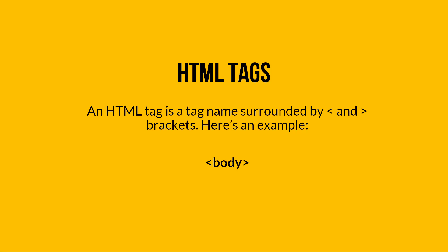We've talked about HTML as a markup language and we use tags to do the marking up. So now let's talk about HTML tags and exactly what they are. What an HTML tag is, is a tag name surrounded by less than and greater than brackets. You can see an example here of the body tag — you'll see a less than and a greater than sign, and the word body inside of that. Body is the name of the tag, and then we put it inside of these brackets to denote that it is an HTML tag.